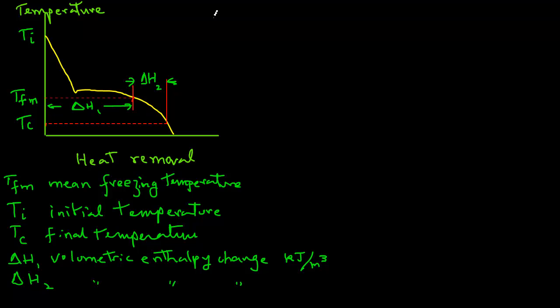From the data collected from a large number of freezing experiments involving high moisture biological materials, Pham obtained this empirical equation for Tfm: Tfm equals 1.8 plus 0.263 Tc plus 0.105 times Ta.